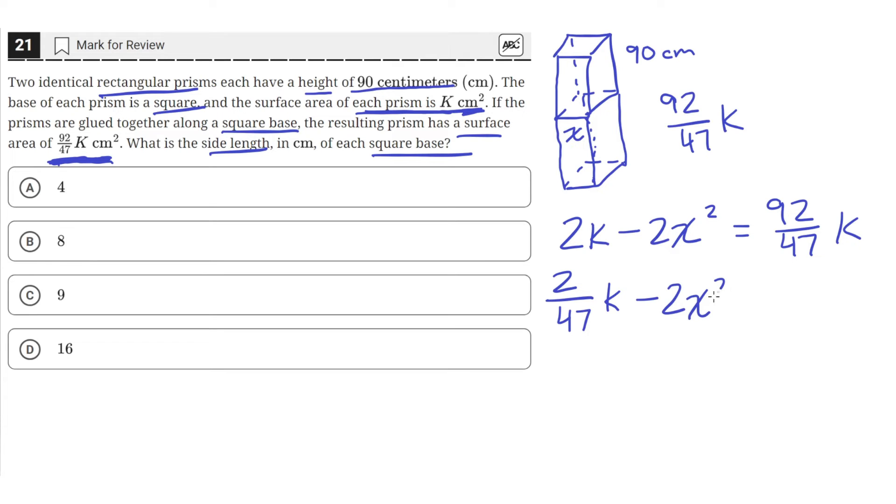Then we'll have the minus 2x², and that'll be equal to 0. And if we move this to the other side by adding it to both sides, we'll get that 2 over 47 k is equal to 2x². And we can further simplify that to k equals 47x². So now we have that k equals 47x².